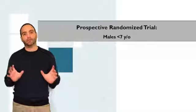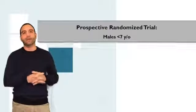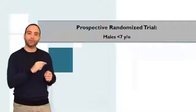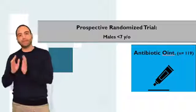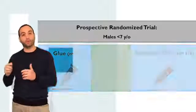So they did a Prospective Randomized Trial. One group had a circumcision followed by the placement of antibiotic ointment and the second group had a circumcision followed by the placement of surgical glue.